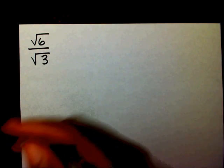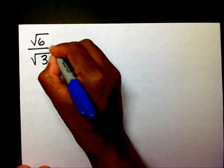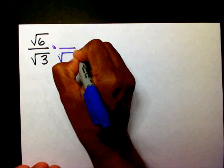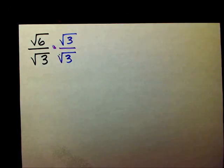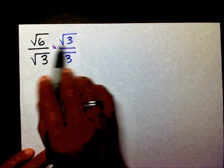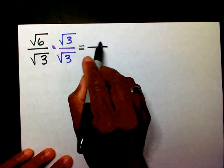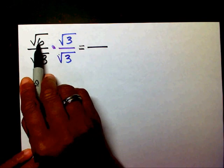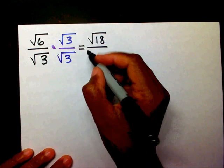What that means is that whatever the radical is in your denominator, you're going to multiply it on the bottom and on the top — in the numerator and the denominator. The only thing we need to do is multiply across. So radical 6 times radical 3 is radical 18, and radical 3 times radical 3 is radical 9.